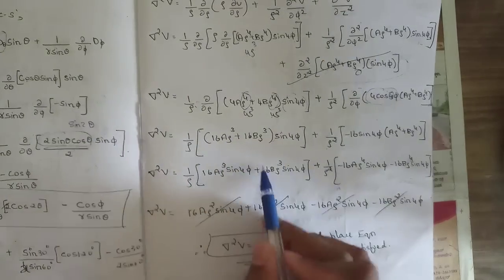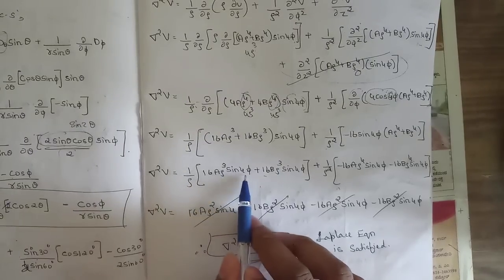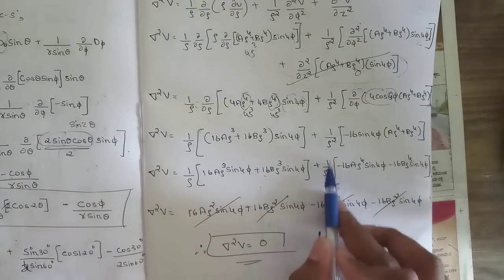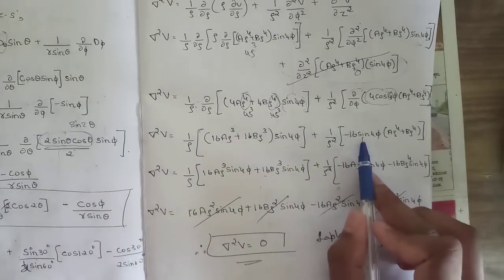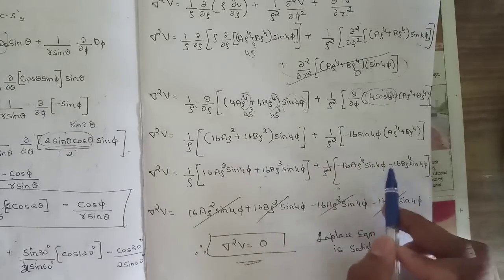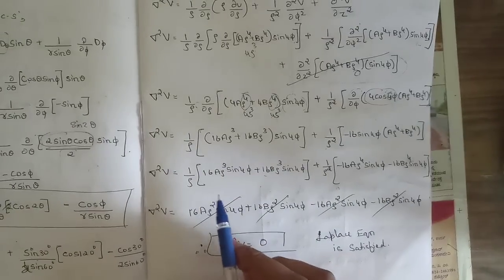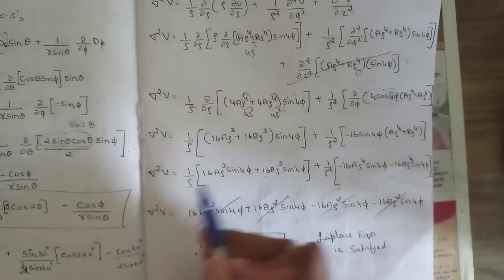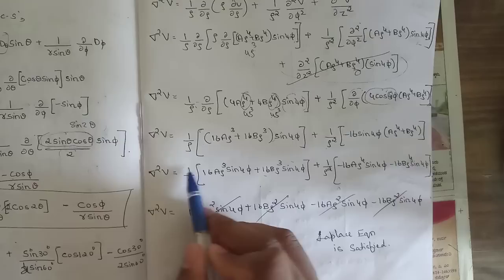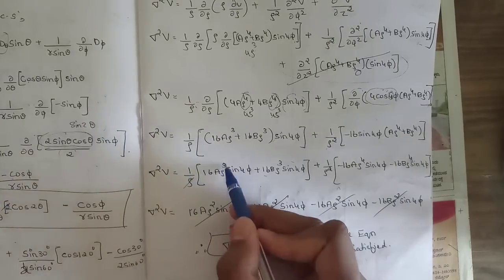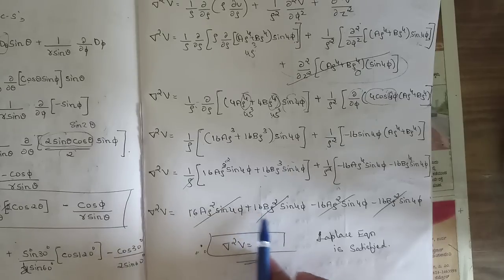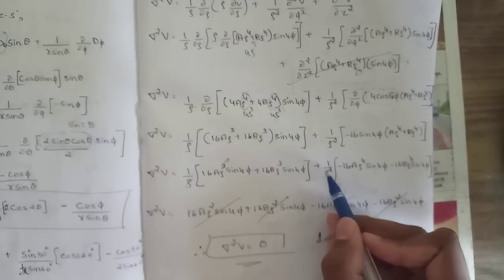Combining: (1/ρ)(16aρ³ sin4φ + 16bρ³ sin4φ) + (1/ρ²)(−16aρ⁴ sin4φ − 16bρ⁴ sin4φ). Taking ρ common from the first group cancels with 1/ρ, giving 16aρ² sin4φ + 16bρ² sin4φ. Similarly, ρ² cancels in the second group giving −16aρ² sin4φ − 16bρ² sin4φ.